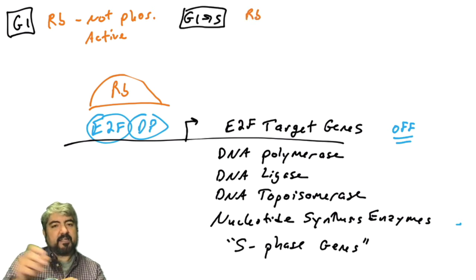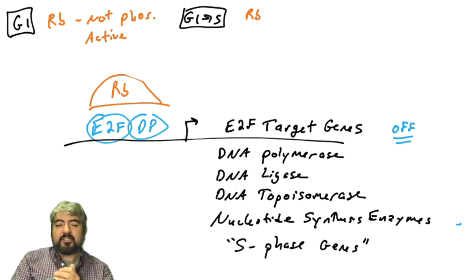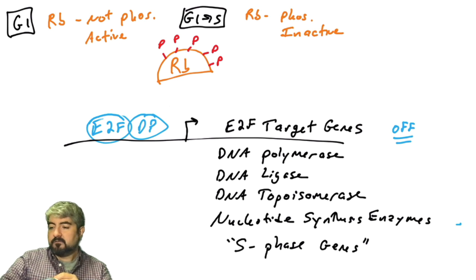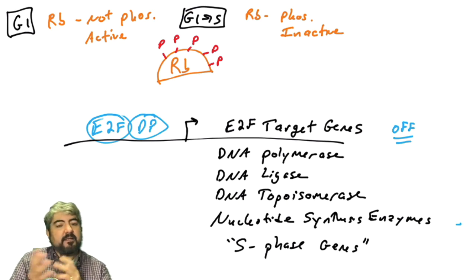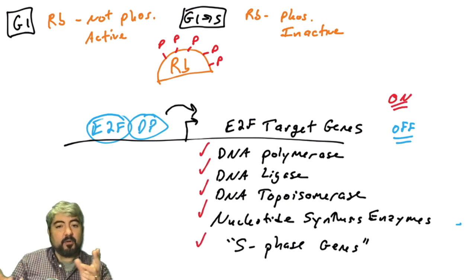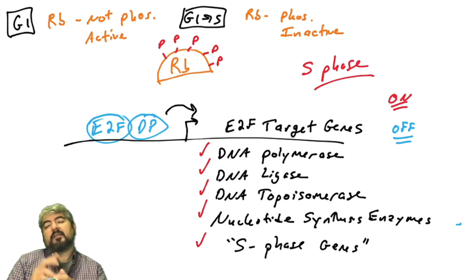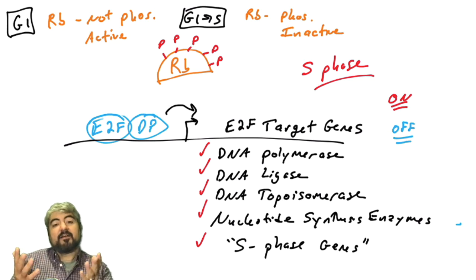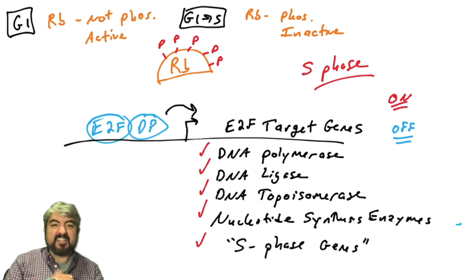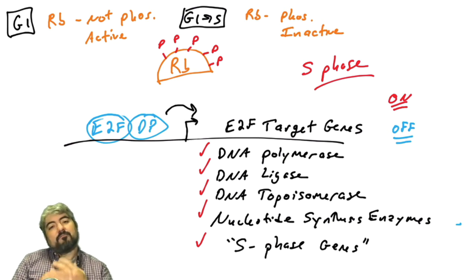When cells get a pro-growth signal, like growth factors, RB becomes phosphorylated and inactivated — it actually detaches from the E2F/DP1 complex. All these target genes are going to be turned on. This is what gets the cell into S phase — not just the turning on of the cyclin E gene, but turning on the genes actually involved in DNA synthesis and DNA replication, so cells will go through S phase with all the enzymes required to actually replicate the genome.